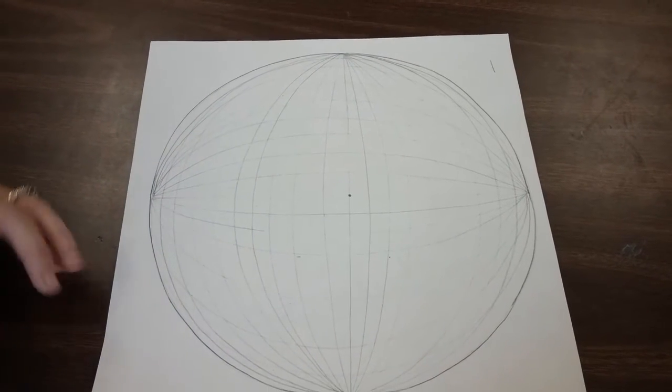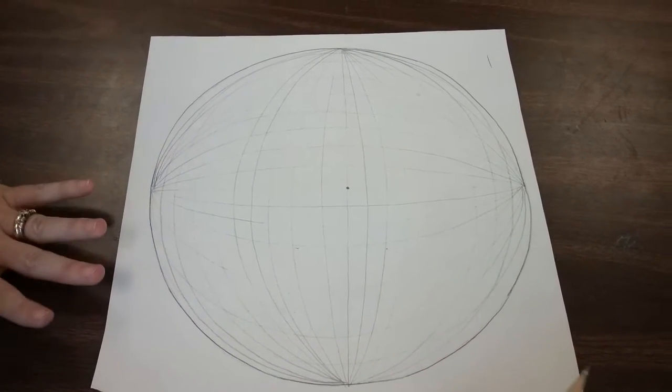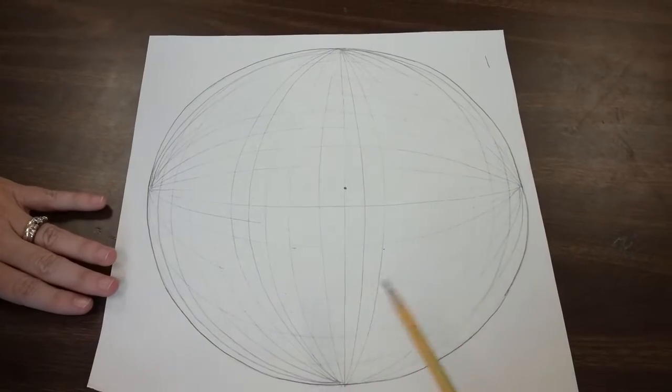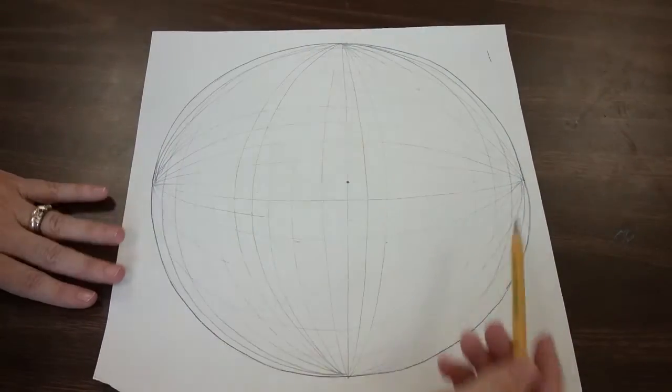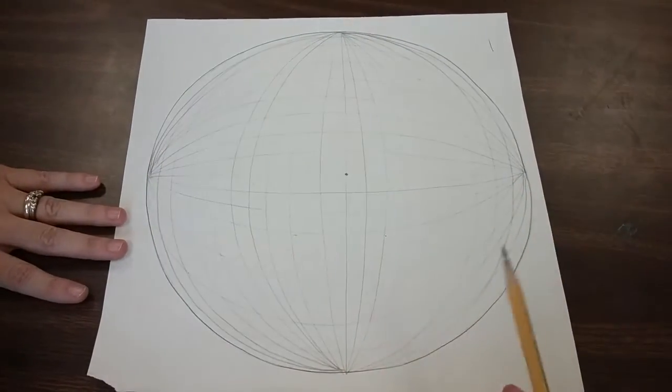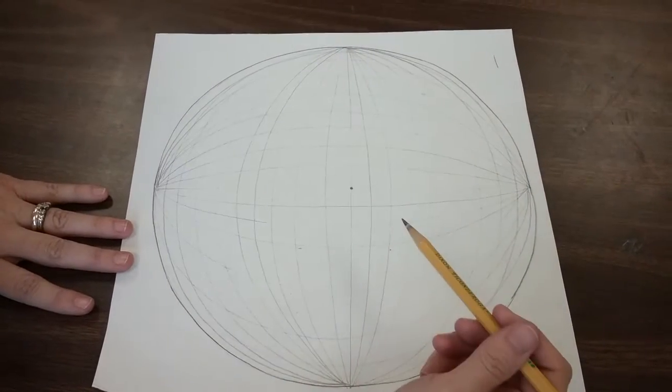Today I'm going to show you how to do a five-point perspective city inside of a crystal ball. It's easier if you start off with tracing a circle and then making all these lines so it looks like a globe, like longitude and latitude lines.